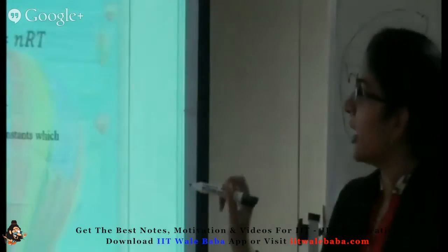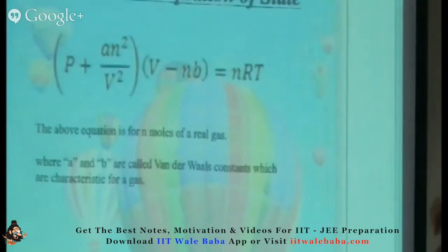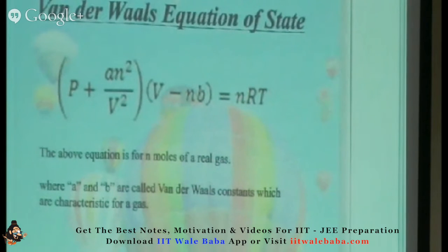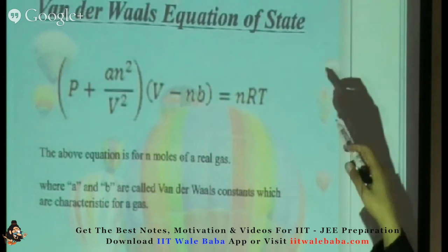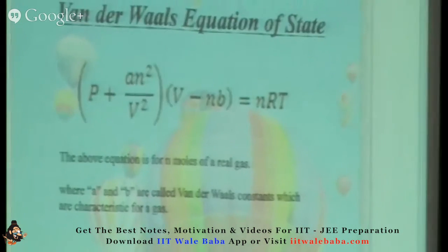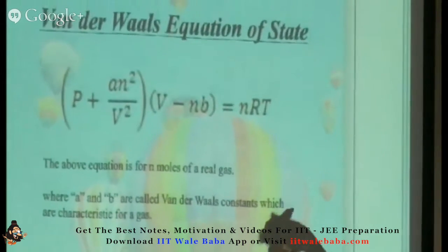After making these two corrections, a new equation of state came into play which completely explains the behavior of real gases — this is called the Van der Waals equation, or equation of state. It explains the state of any real gas. Gases which satisfy this equation are called real gases or Van der Waals gases. The constants a and b are called Van der Waals constants.